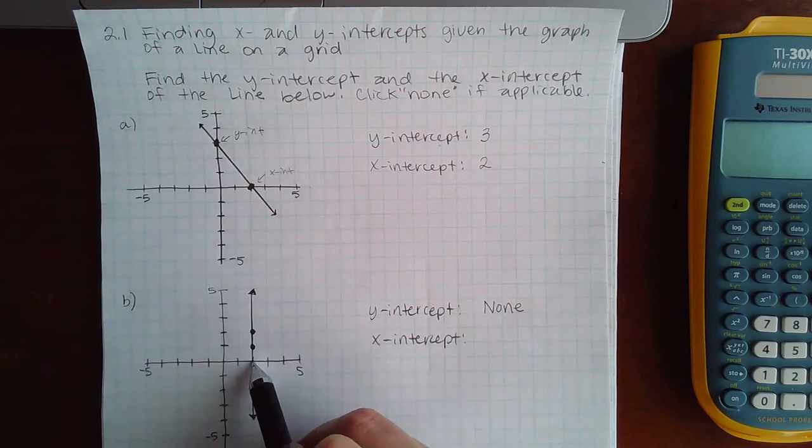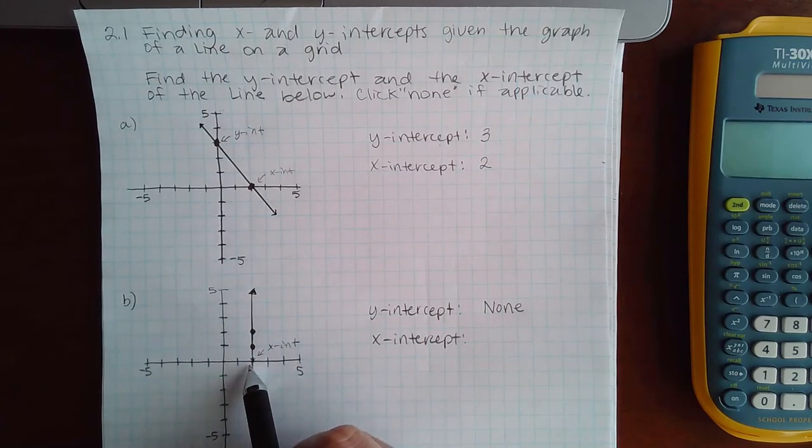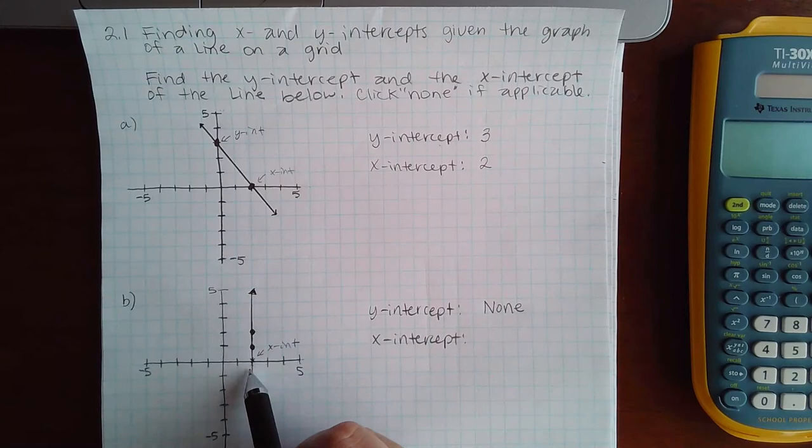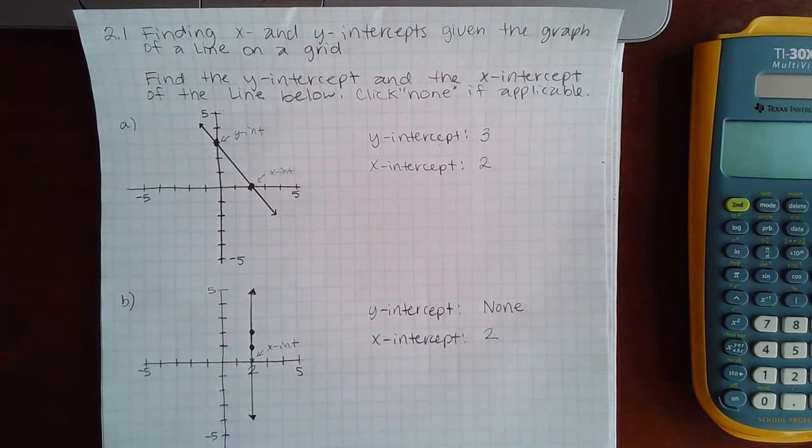It does, however, cross the x-axis right here. That's the x-intercept. And what value is that? If this is 5, then that makes 1, 2, 3, 4, 5. So this would be 2. That x-intercept would be a positive 2.